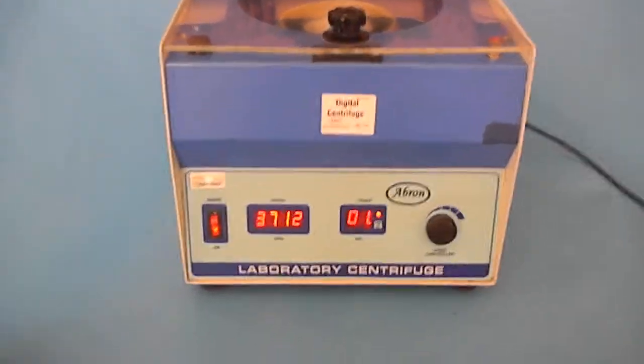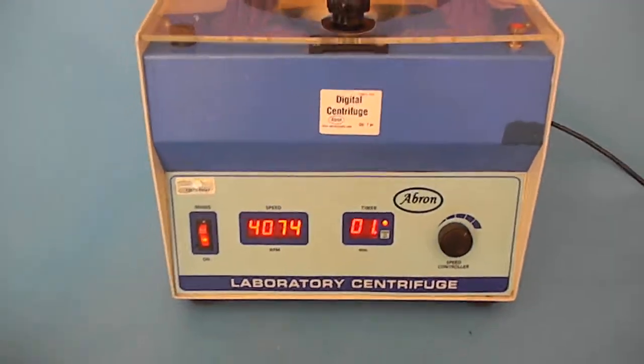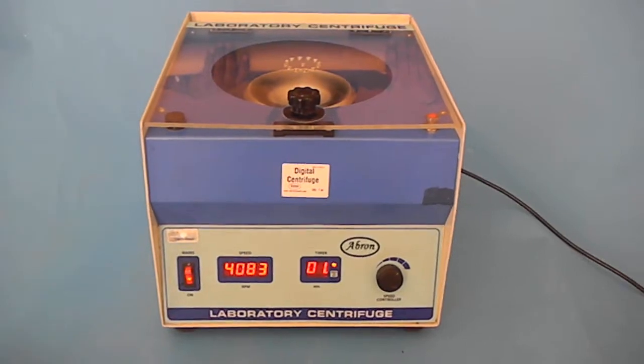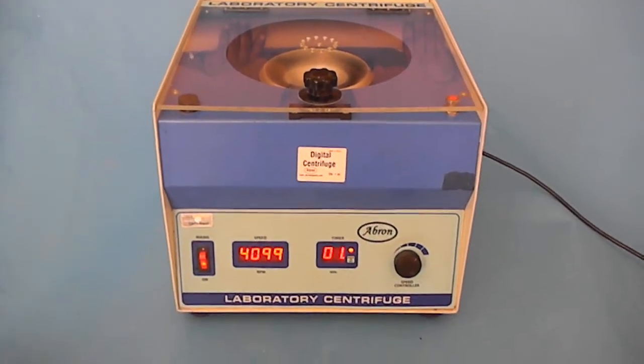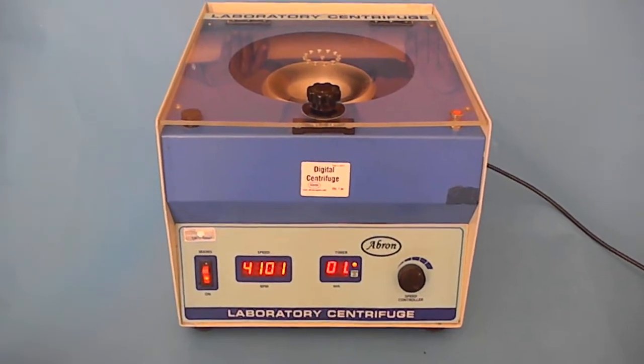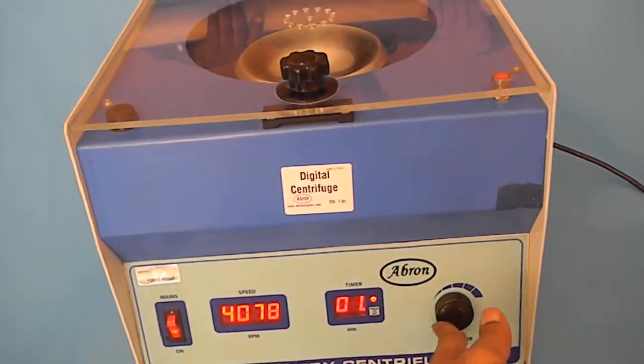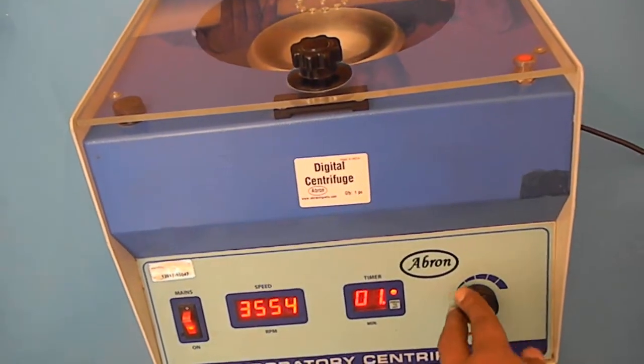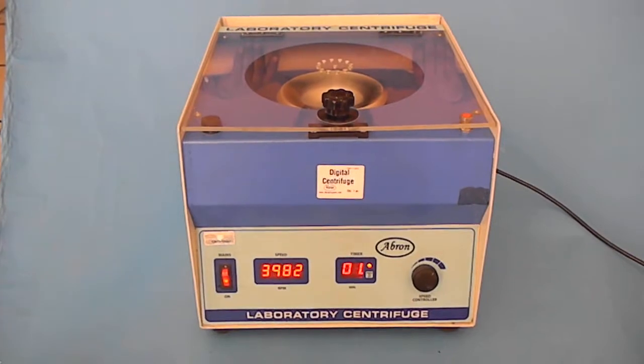The timer is running and the RPM is going up. This is 4000 RPM with a one minute timer. If you need to stop anywhere, you can turn it back to stop it, or it will stop automatically after one minute. The timer is going on.